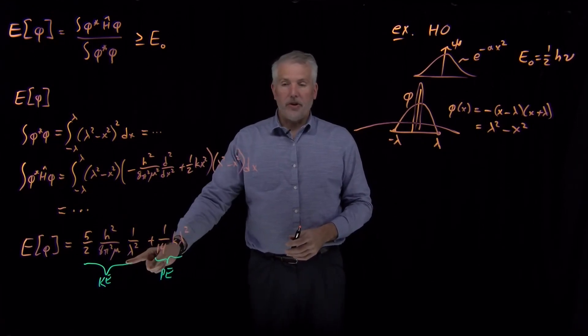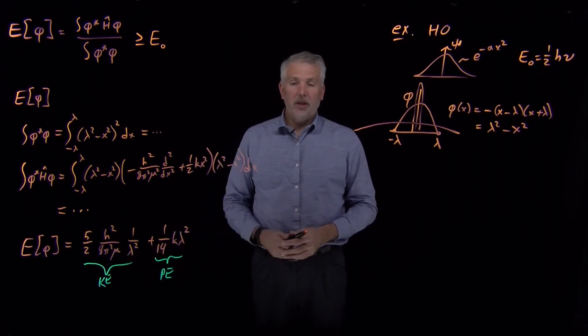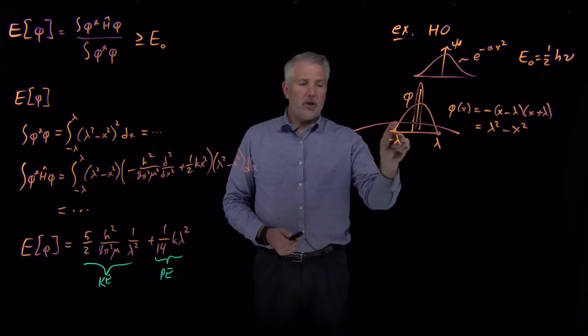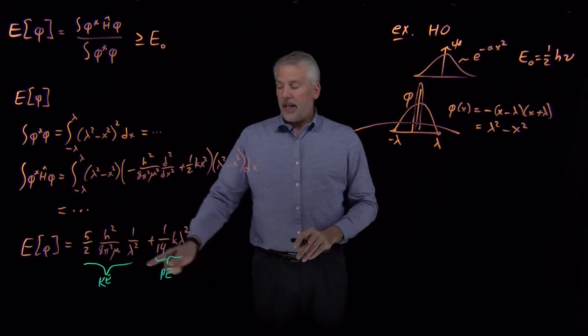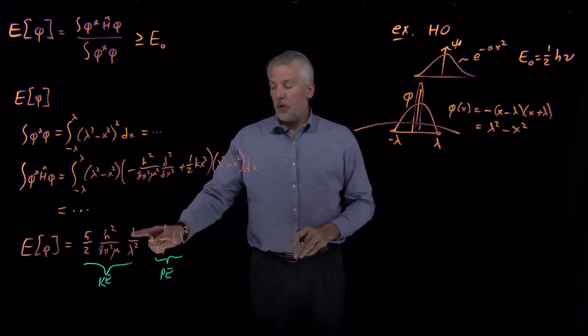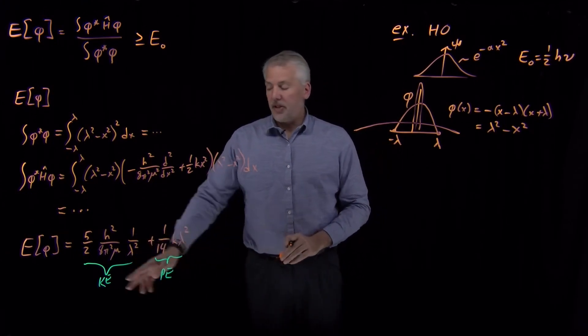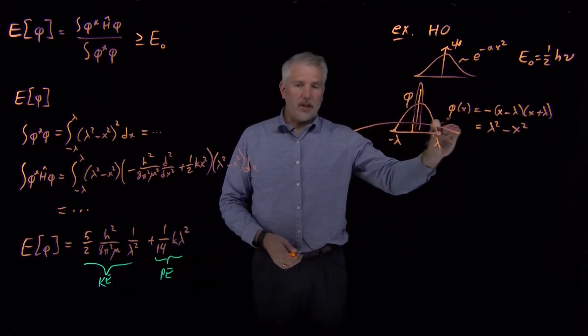Or I can do the opposite. If lambda is a large number and I've got a very broad wave function, then the kinetic energy is very small. When lambda is large, one over lambda squared is small, so the kinetic energy is quite low because this function has very little curvature.